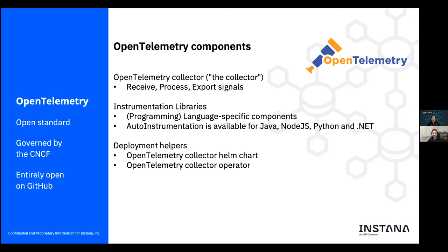What is interesting is that the project provides auto instrumentation for some runtimes such as Java, Node.js, Python, and .NET, which basically means removing a lot of manual work from data collection and just including the OpenTelemetry in-process components into your application — for example, including the Java agent into your Java applications. The Java agent will automatically instrument your workload with minimum time to value, even with this open source option.